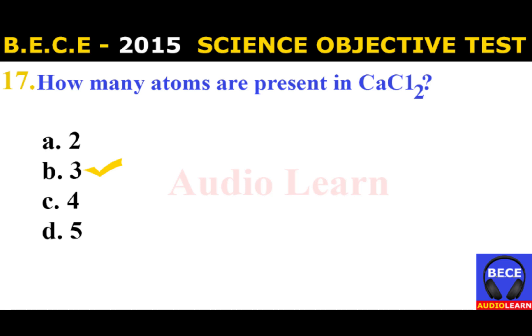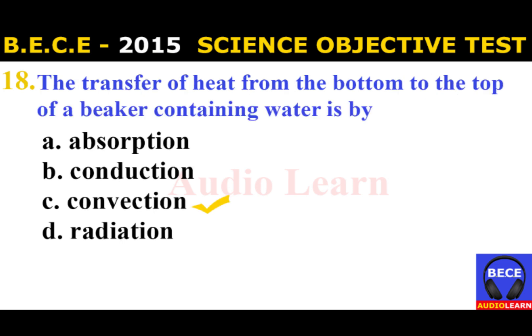Number 17: How many atoms are present in CaCO₃? A. Two, B. Three, C. Four, D. Five. The answer is B. Three. The number of atoms present in CaCO₃ is three.